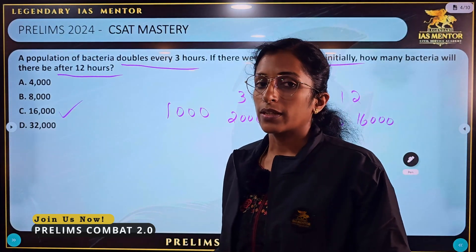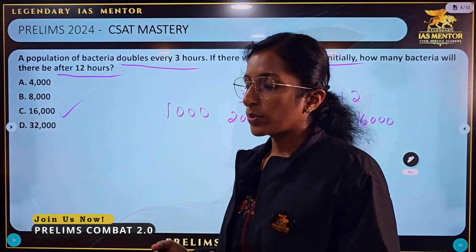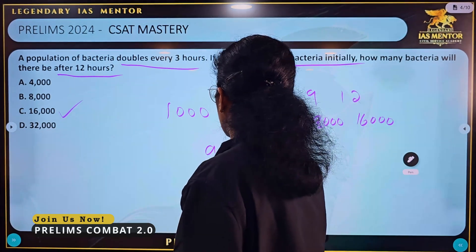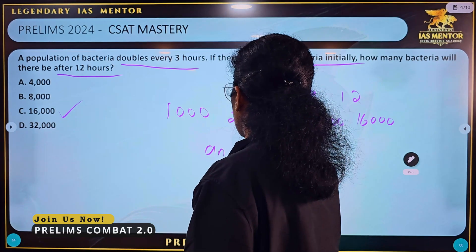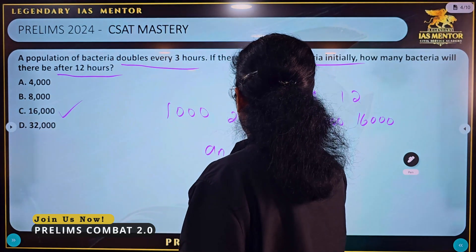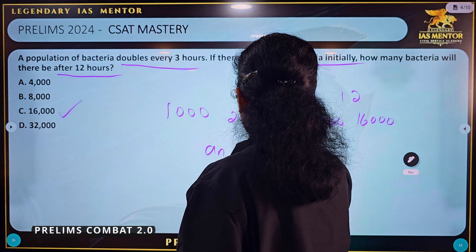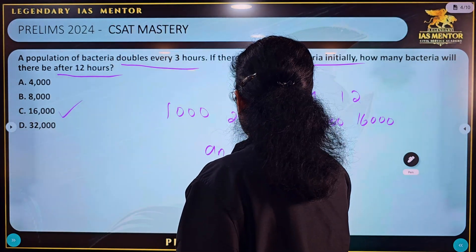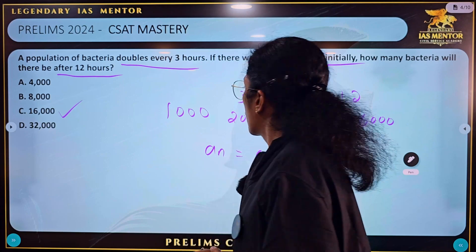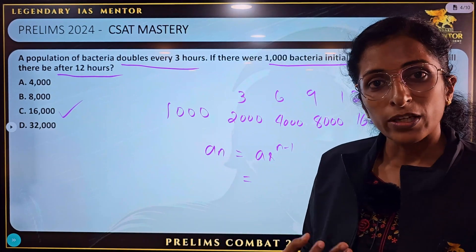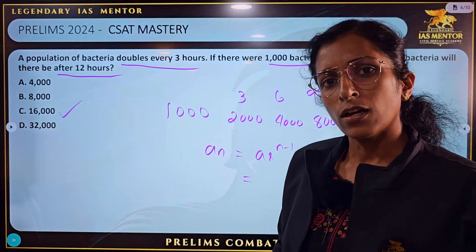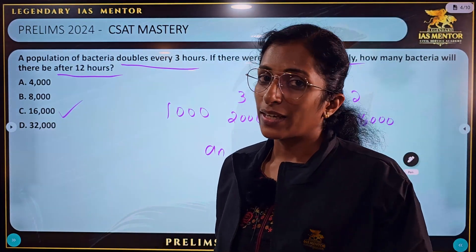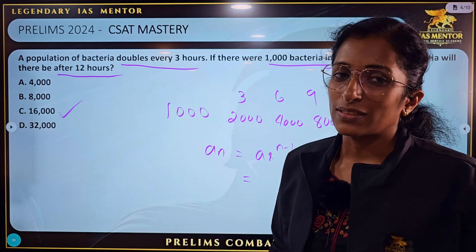We can also use the nth term of a GP: a times r raised to n minus 1. But if we use logical reasoning, we can crack this quickly without the formula.